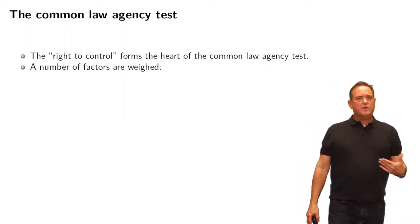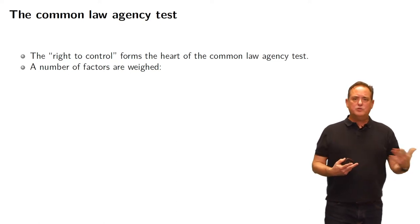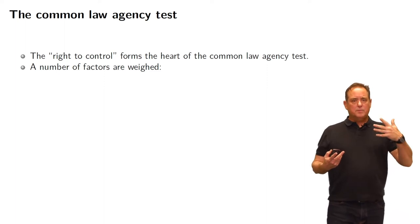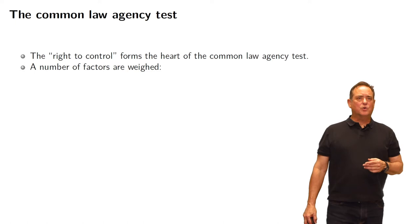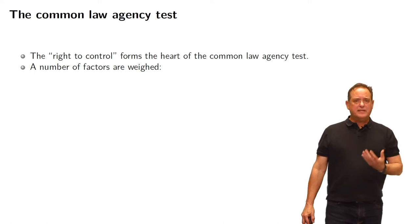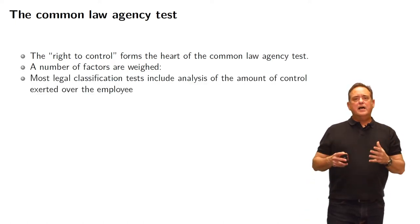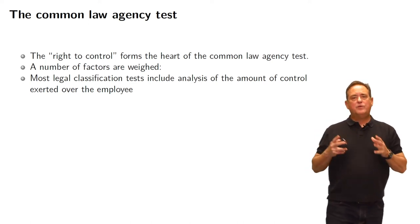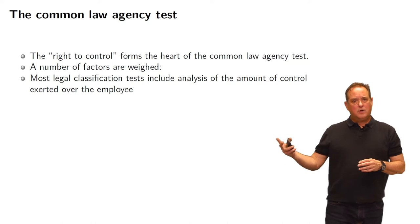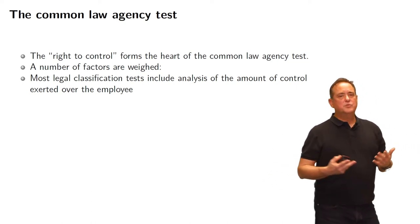We look at a number of factors — about 14 different factors — but the most important one is the right of control. That's going to be the dominant consideration. The question is: does the employer have the right of control over the work of the employee?